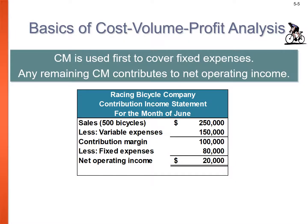The contribution margin is used first to cover fixed expenses, and whatever is left over remains as net operating income. If you sell 500 bikes, sales will be $250,000, total variable expenses are $150,000, leading to a contribution margin of $100,000. Fixed expenses are $80,000, so net operating income is $20,000.